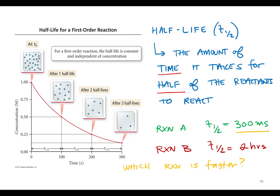So with the shorter half-life, those A molecules are going to react a lot faster. Every 300 milliseconds you're losing half of the A molecules, whereas B, they're staying around for two hours and then you lose half of them. So yes, reaction A is faster.